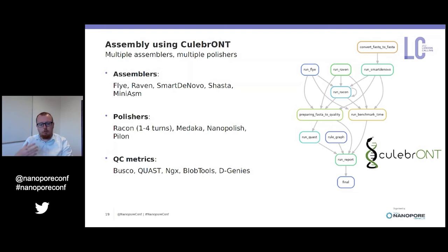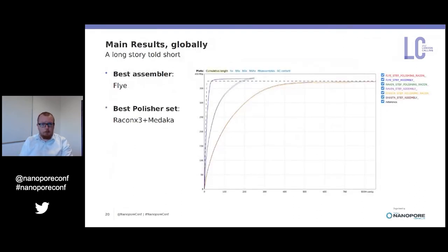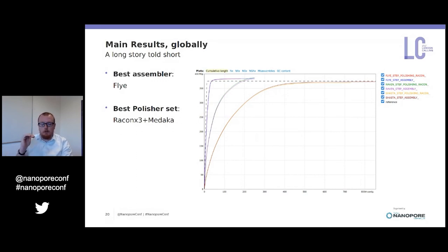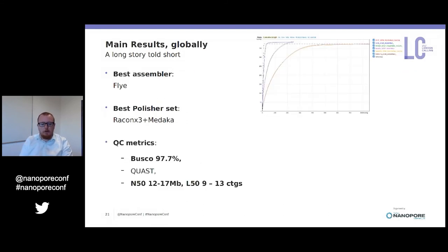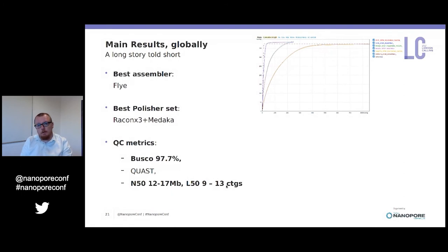To make a long story short, we tested multiple assemblers — Flye, Raven, SMARTdenovo, Shasta, miniasm — and different polishers with different conditions. What we learned is that for rice the best assembler is Flye. Flye produces many contigs, but there is a large number of very small ones alongside very large ones, giving very good assembly continuity. We settled on the combination Racon plus Medaka for high-quality polishing, achieving a BUSCO gene-space completeness score of 97.7 percent. Our contig N50 ranges from 12 to 17 megabases depending on the assembly.